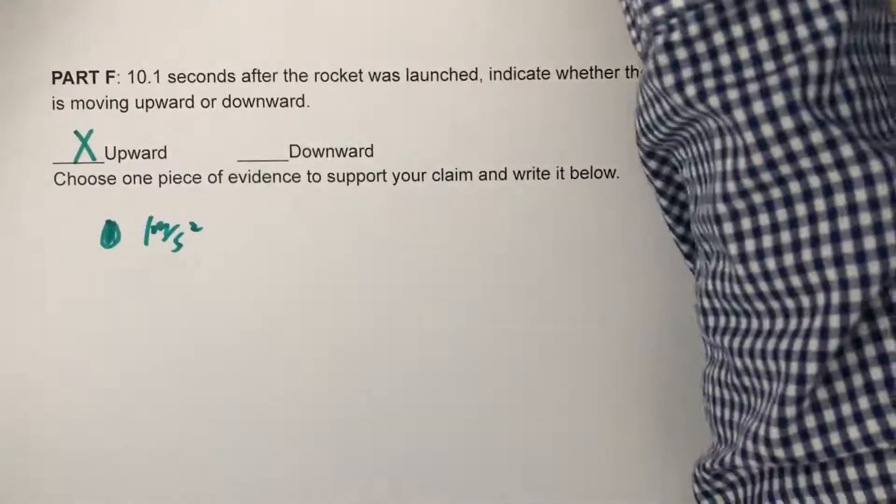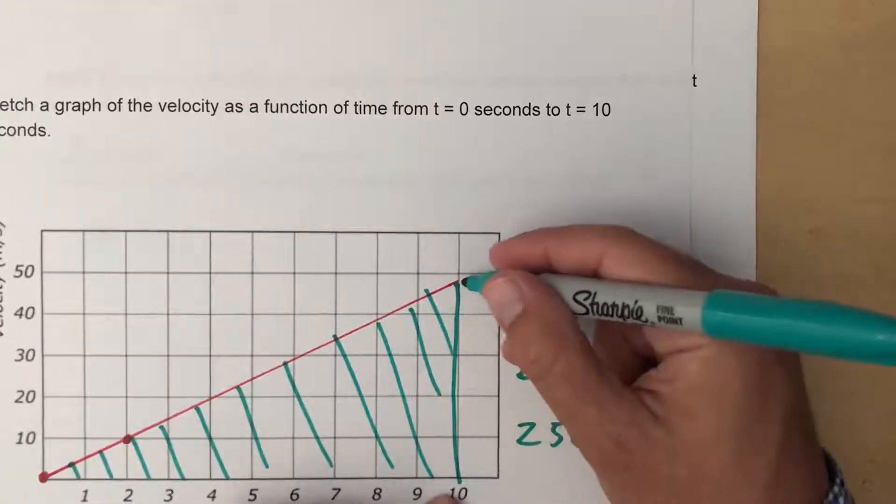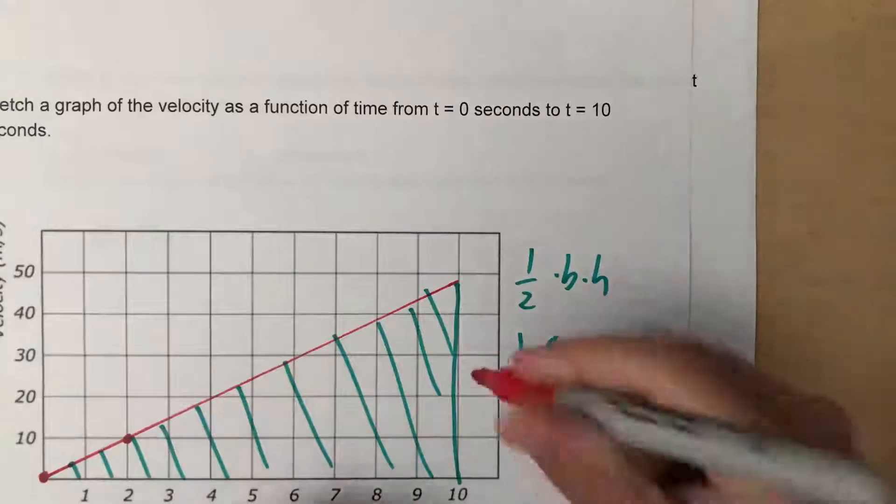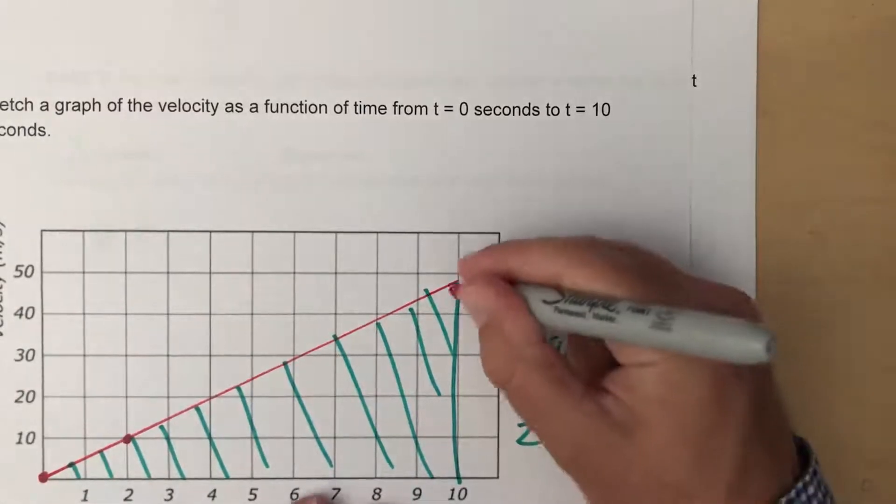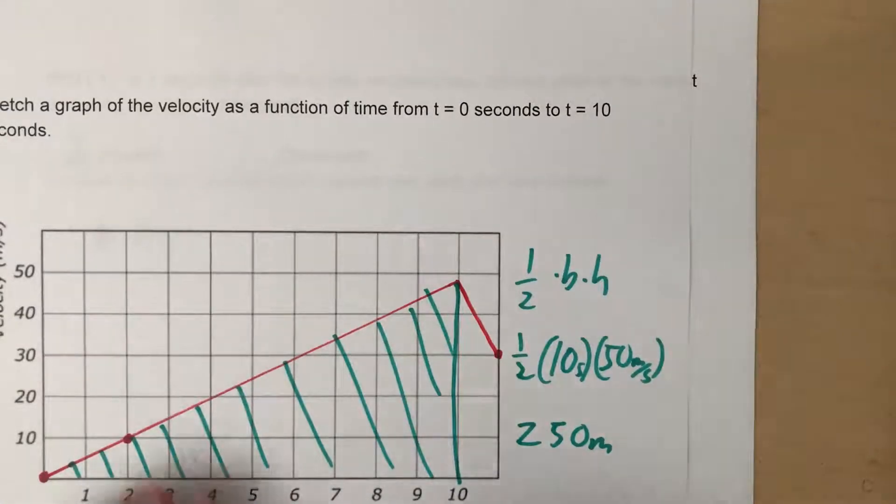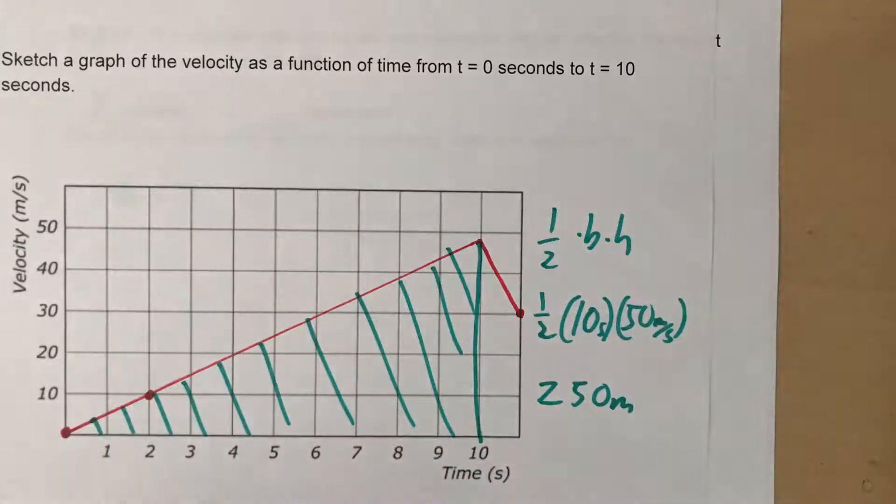Or another way you could point to it is if I bring back my velocity versus time graph, we will start to come down with a slope of 10. So by one second later, if I add this on here, we will have dropped by 10 meters per second. We'll be all the way down here. But we still won't have reached zero meters per second. We're still going up, just not going up as fast as we were before.